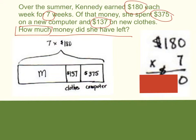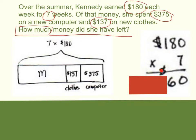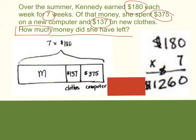Remember, you cannot have two numbers in one place, so we'll carry the five to the hundreds place — right here — and write the six in the tens place. Next, we move to our hundreds: seven times one hundred would be seven hundreds, plus the five more hundreds will give us twelve hundreds. So the total amount of money she earned for the seven weeks was $1,260.